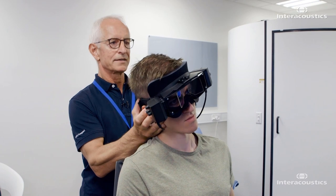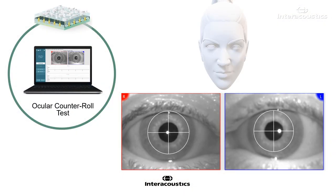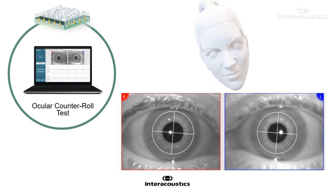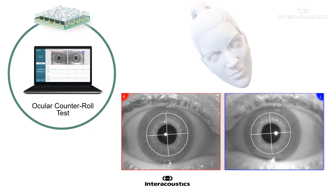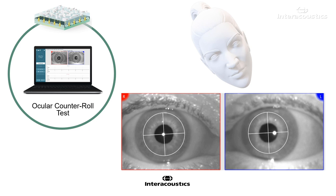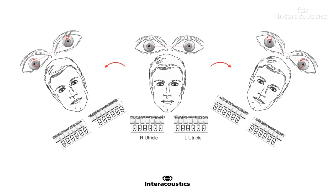Three-dimensional eye movements are recorded throughout the test. The head tilt provokes the otolith ocular reflex, which causes compensatory eye movements by generating static torsion of the eyes in the opposite direction. The movement also generates vertical skew deviation. In a person with normal otolith function, there is no static torsion in the upright head position and the responses to the right and left head tilts are symmetrical.